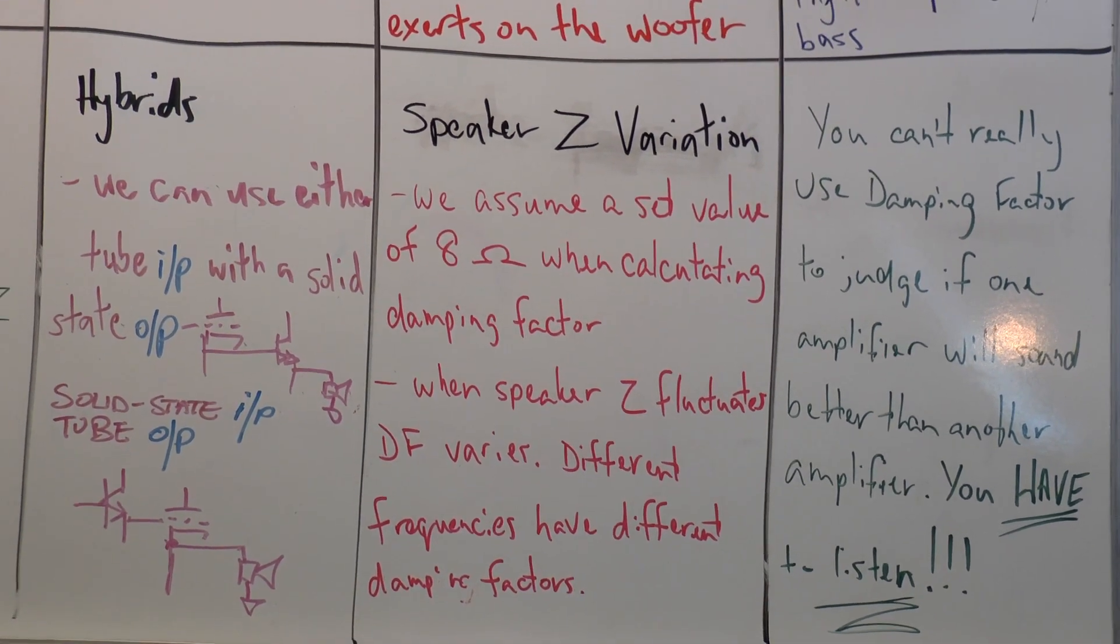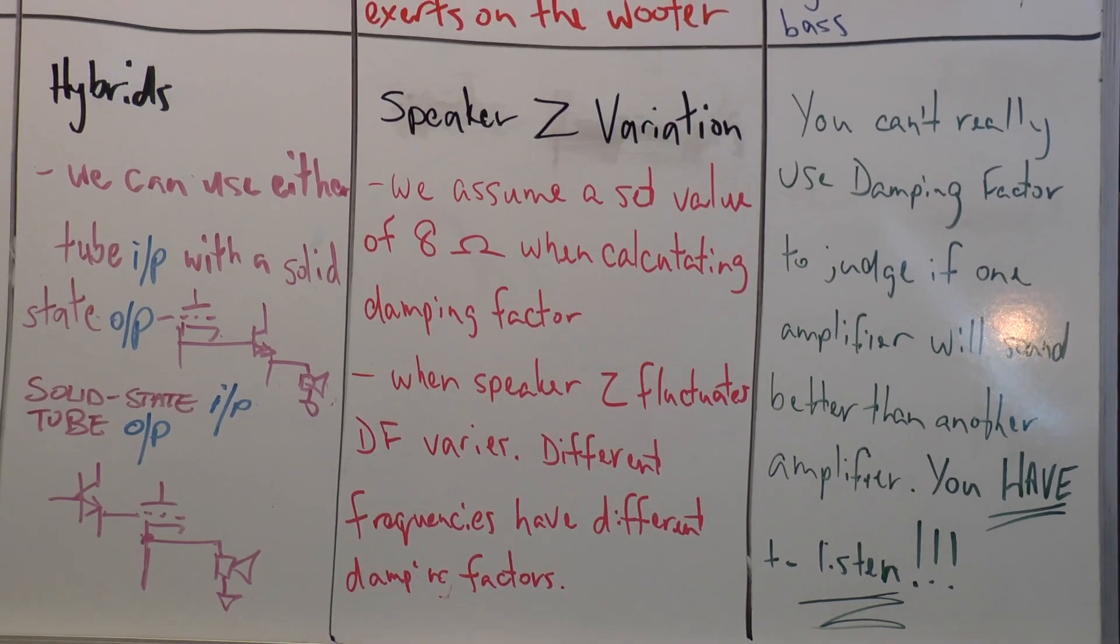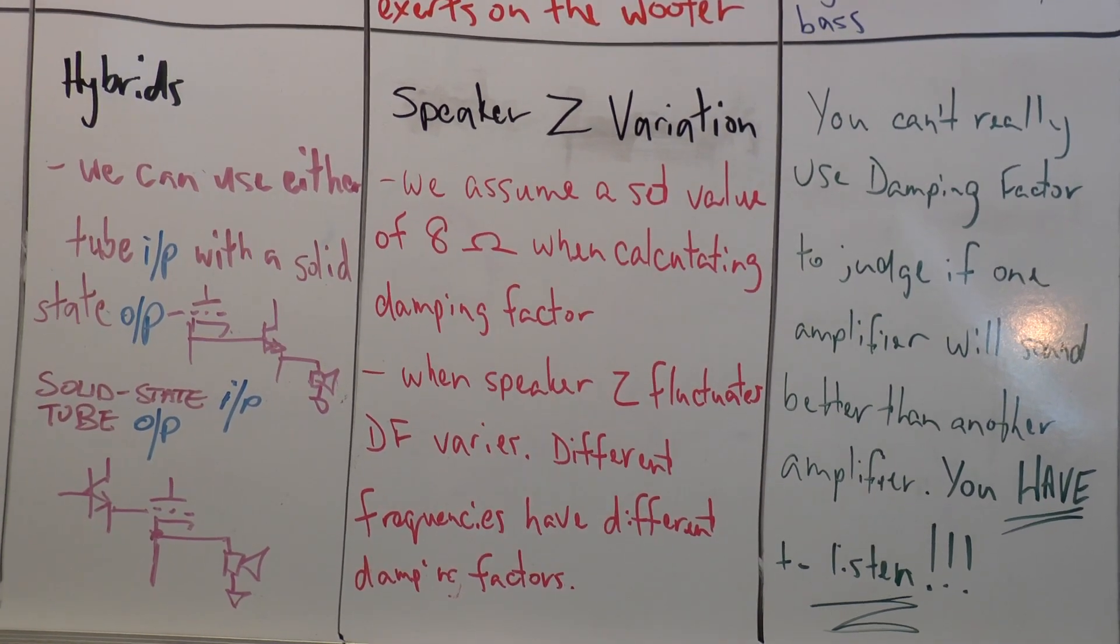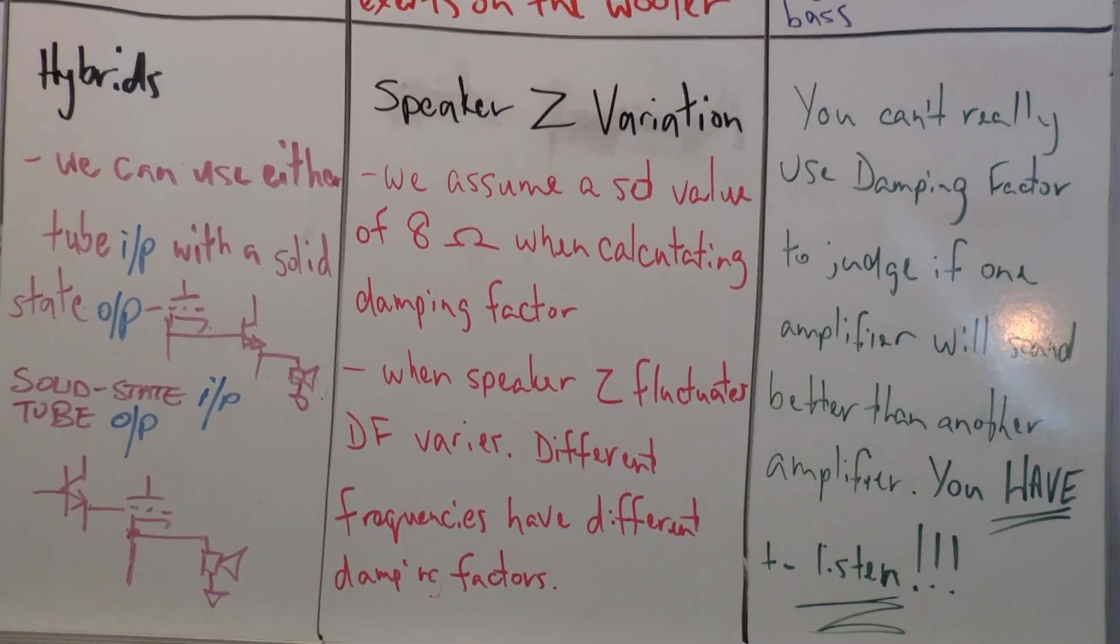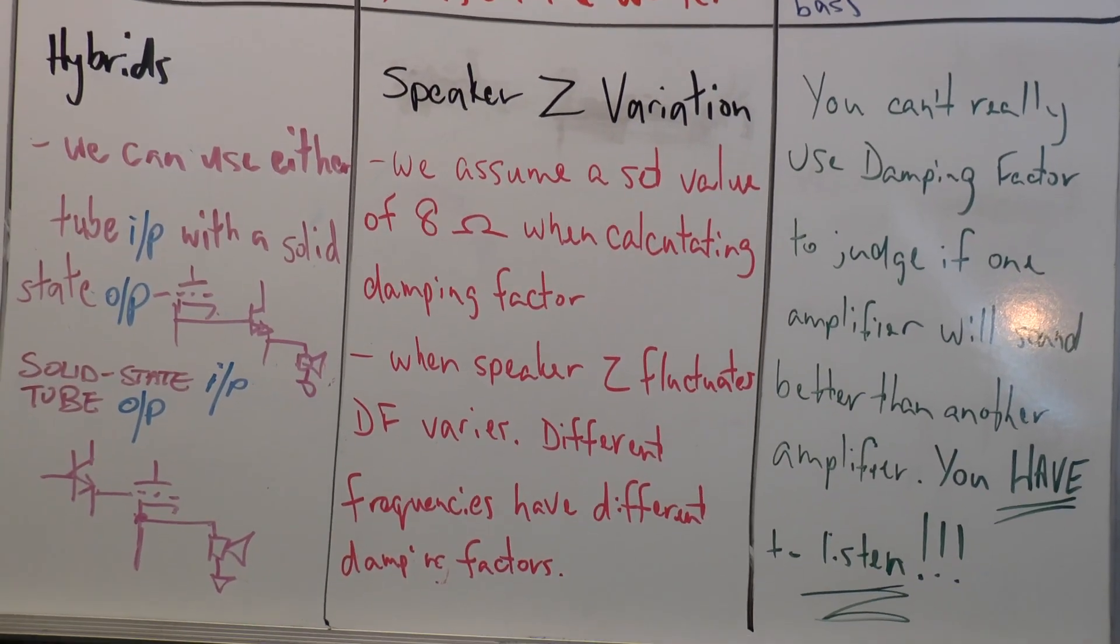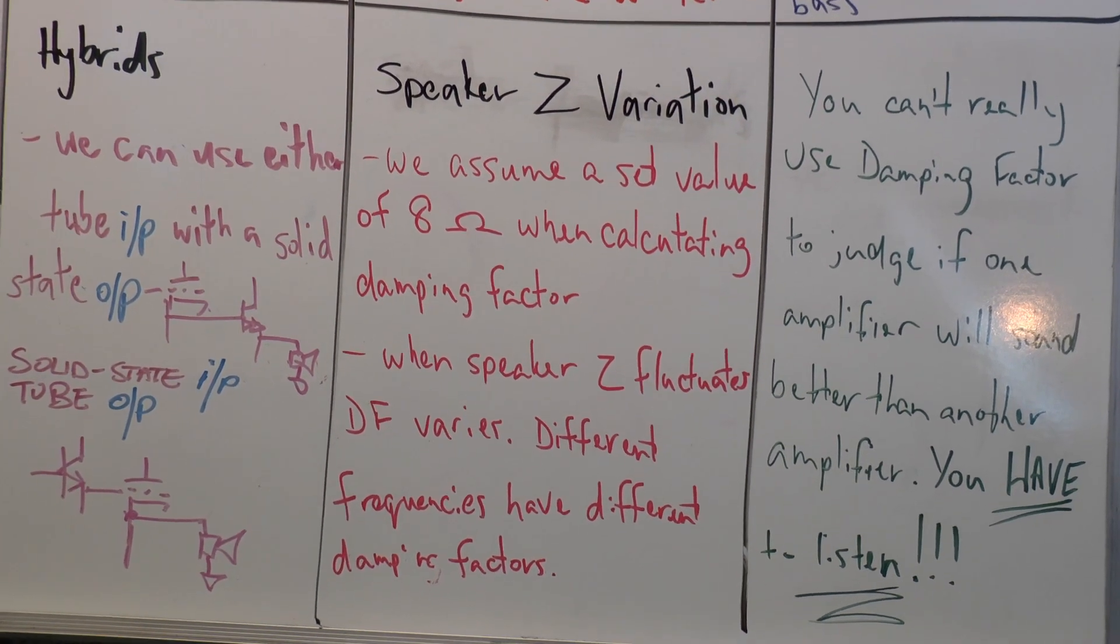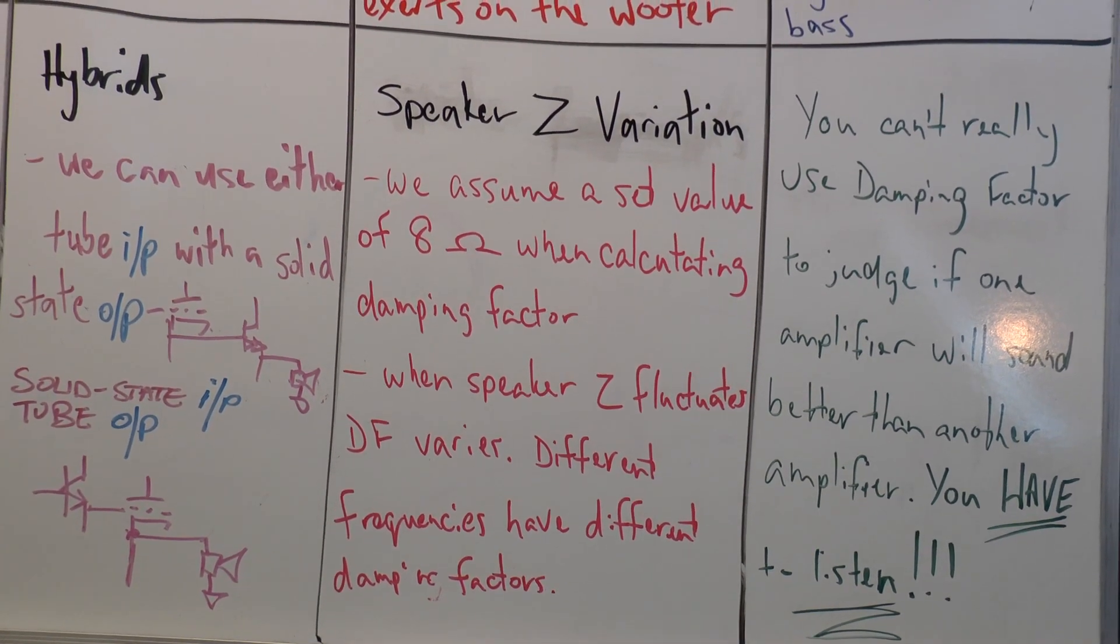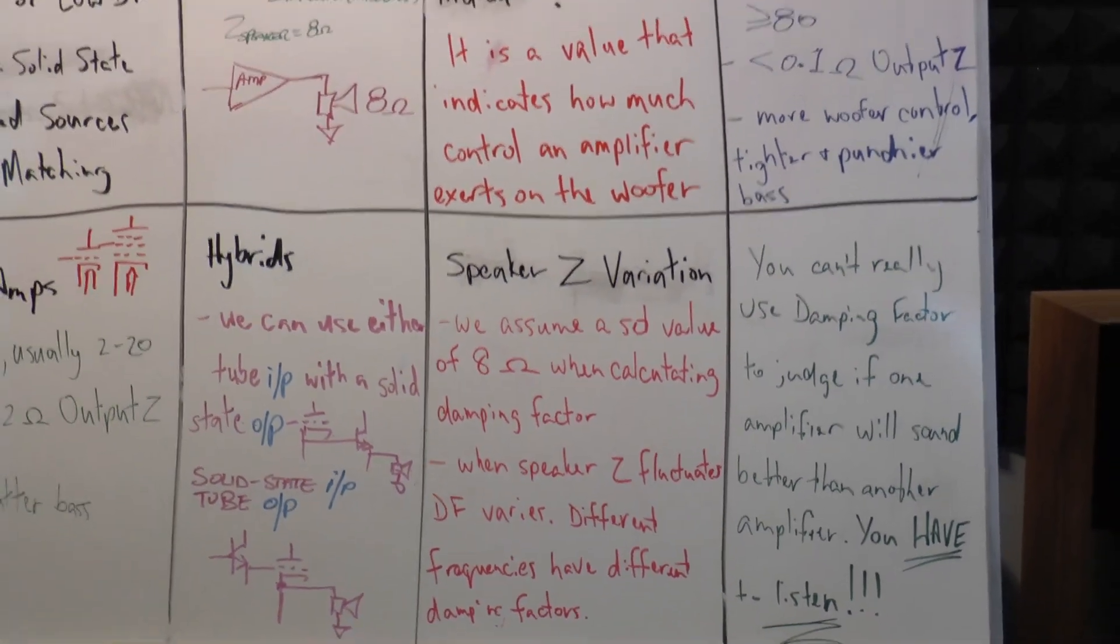So damping factor's changing all the time, and different frequencies have different optimum damping factors during the performance of the music. Within the range of the frequency output of the speaker, different frequencies have different damping factors. So point being that you may think that your speaker requires a high damping factor from an amplifier when it may not.